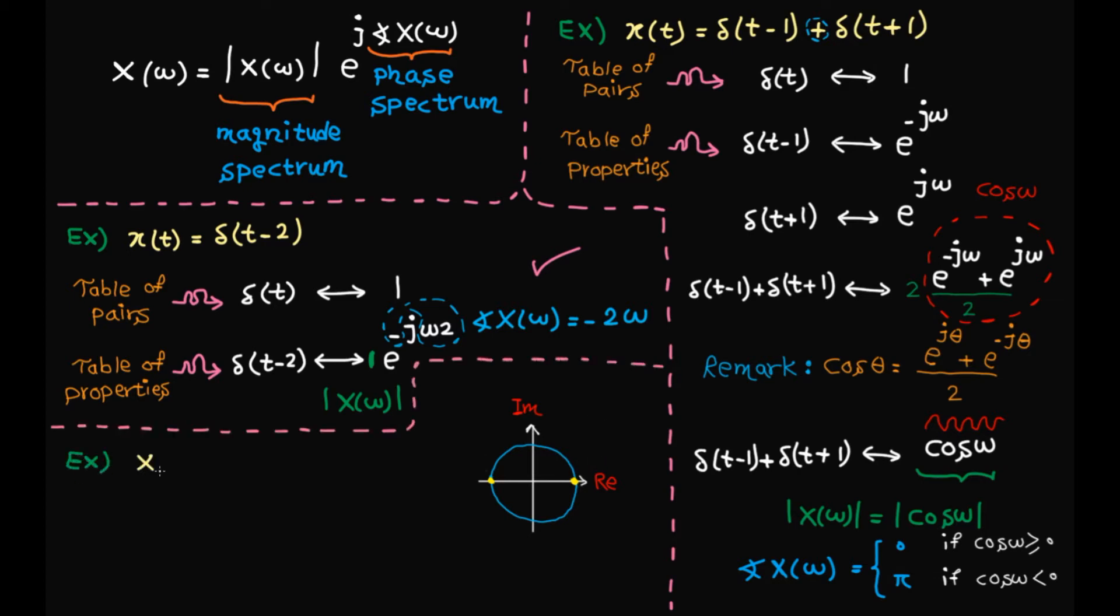Next example. This Fourier transform is given and the question is what are the magnitude and phase spectrum? The magnitude is the absolute value of j over omega, which can be written as the absolute value of j over the absolute value of omega. As you may remember from my lecture on complex numbers, the absolute value for a complex number means the radius from that point to the origin or the distance from that point to the origin. J is pure imaginary and located here. So the radius is 1 and here is the magnitude spectrum.